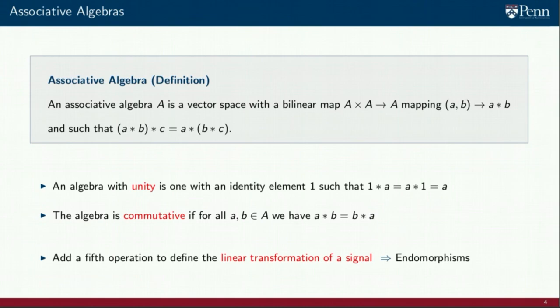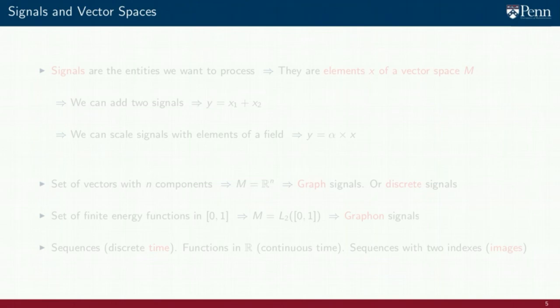What the algebra adds to the vector space is a fifth operation, on top of the two field operations and the two vector space operations. This operation is intended to represent the linear transformation of a signal. To explain this, we need to introduce the space of endomorphisms of a vector space. But first, let's recap the important aspects of a vector space as they pertain to the linear processing of signals.